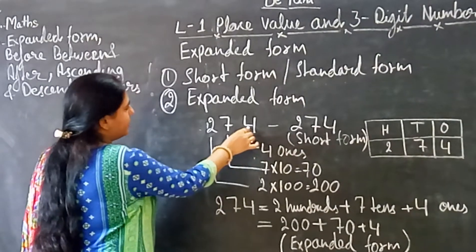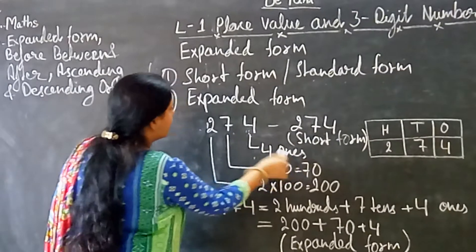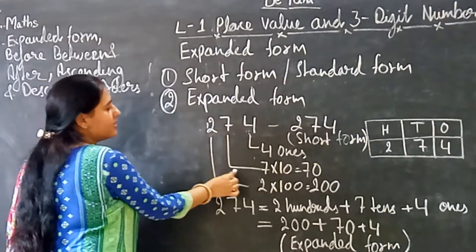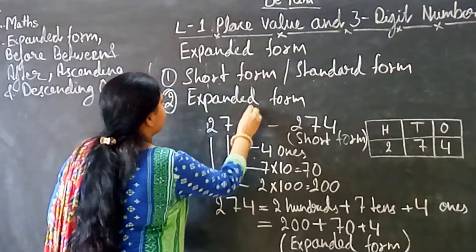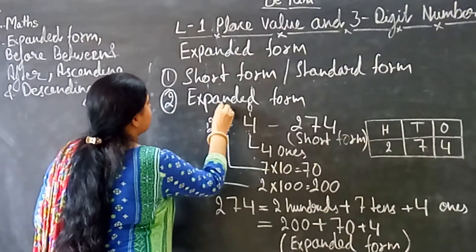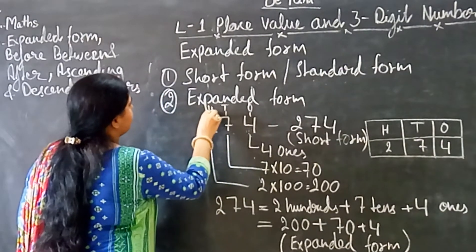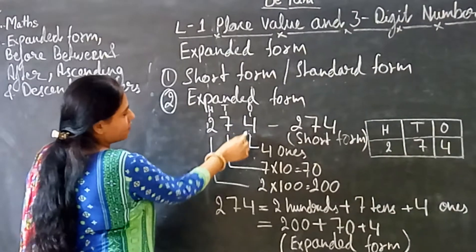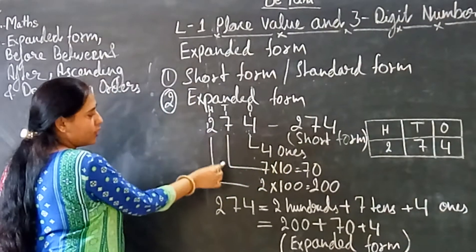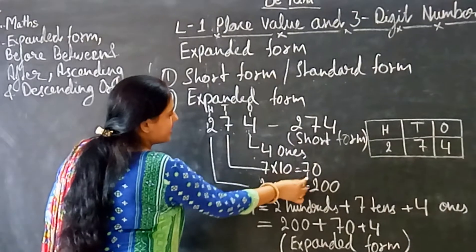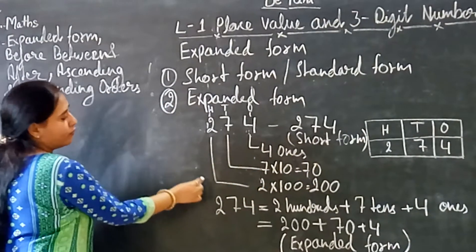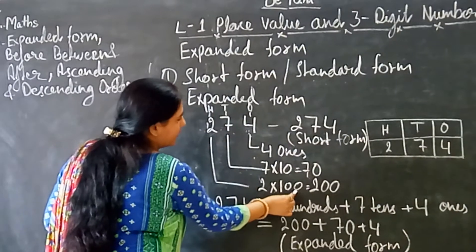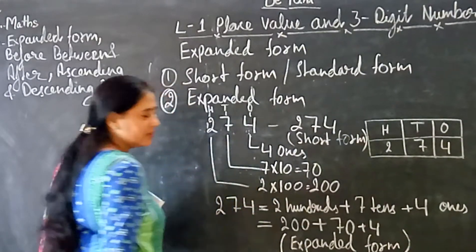274. What is the place value of 4? 4 ones. What is the place value of 7? Because it is at 10th place. It is at 1's place, it is at 10th place, and it is at 100th place. So place value of 4 is 4 ones, place value of 7 is 7 tens, means 7 into 10 is 70, and place value of 2 is 2 into 100, 200. Got it?